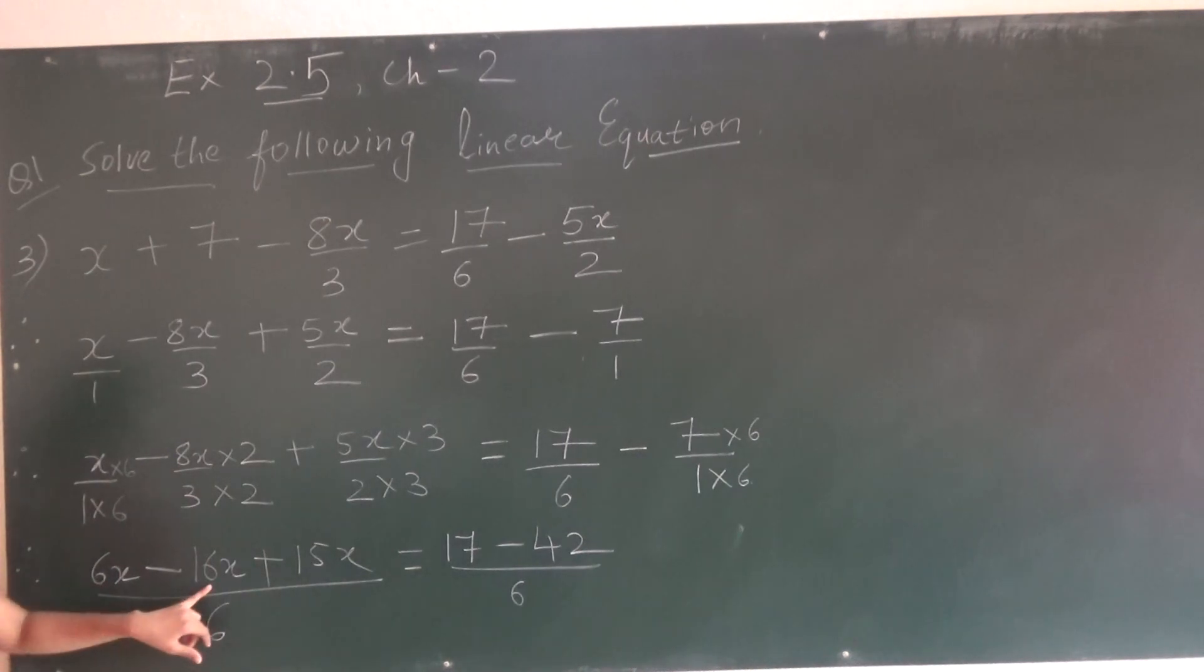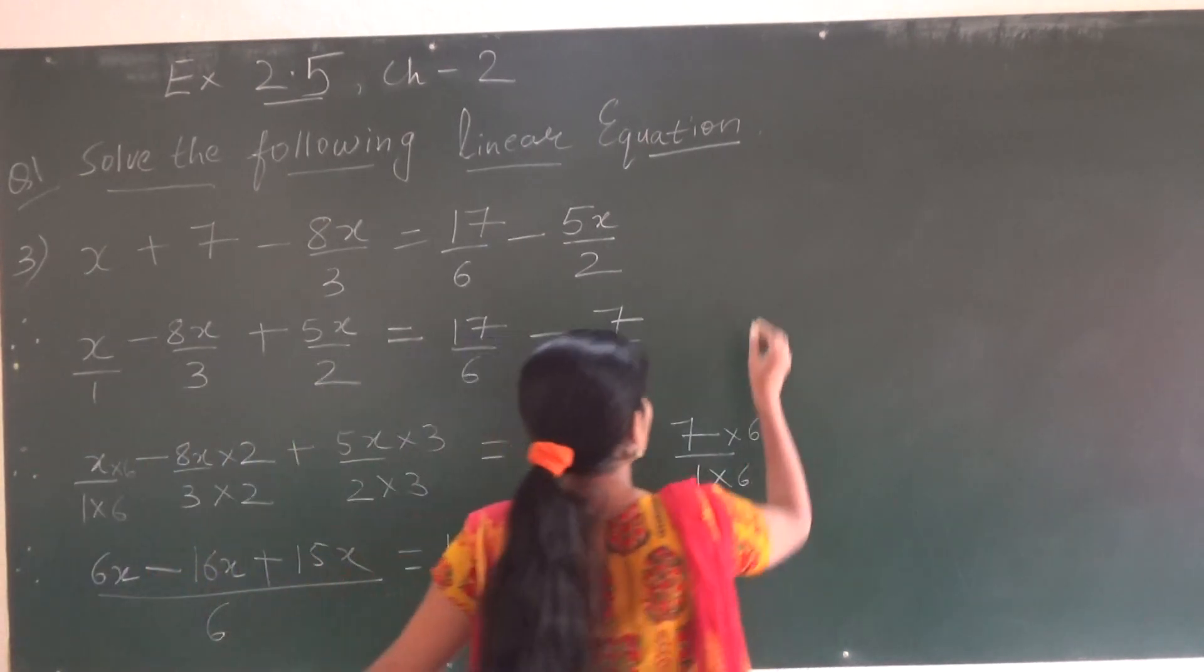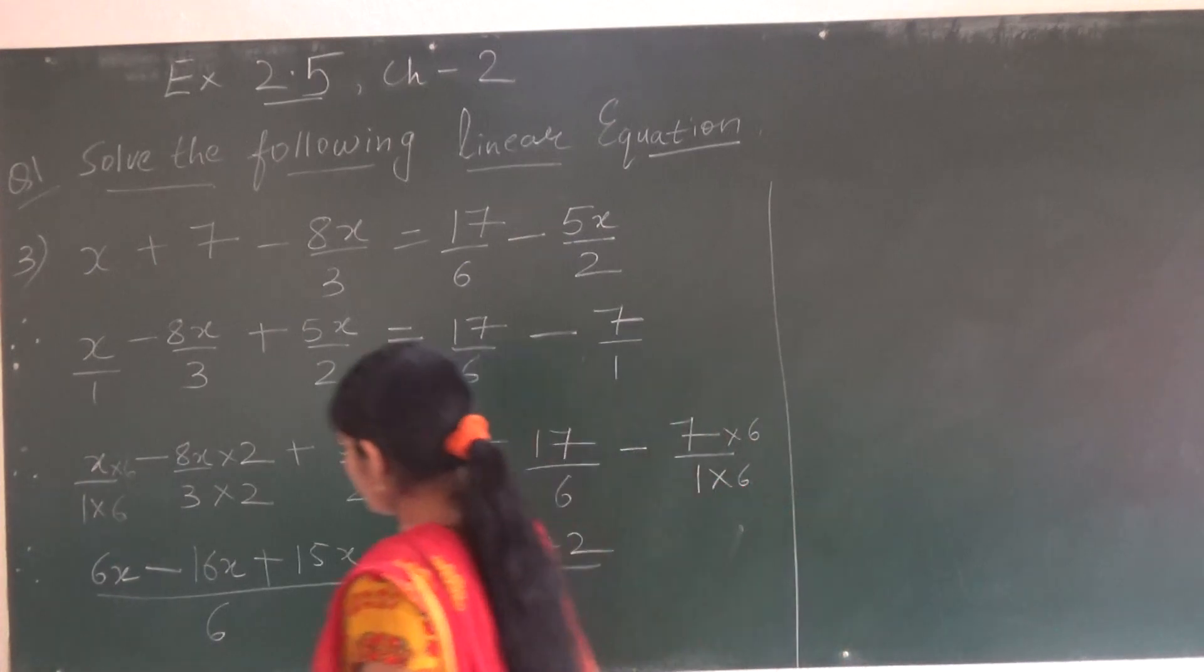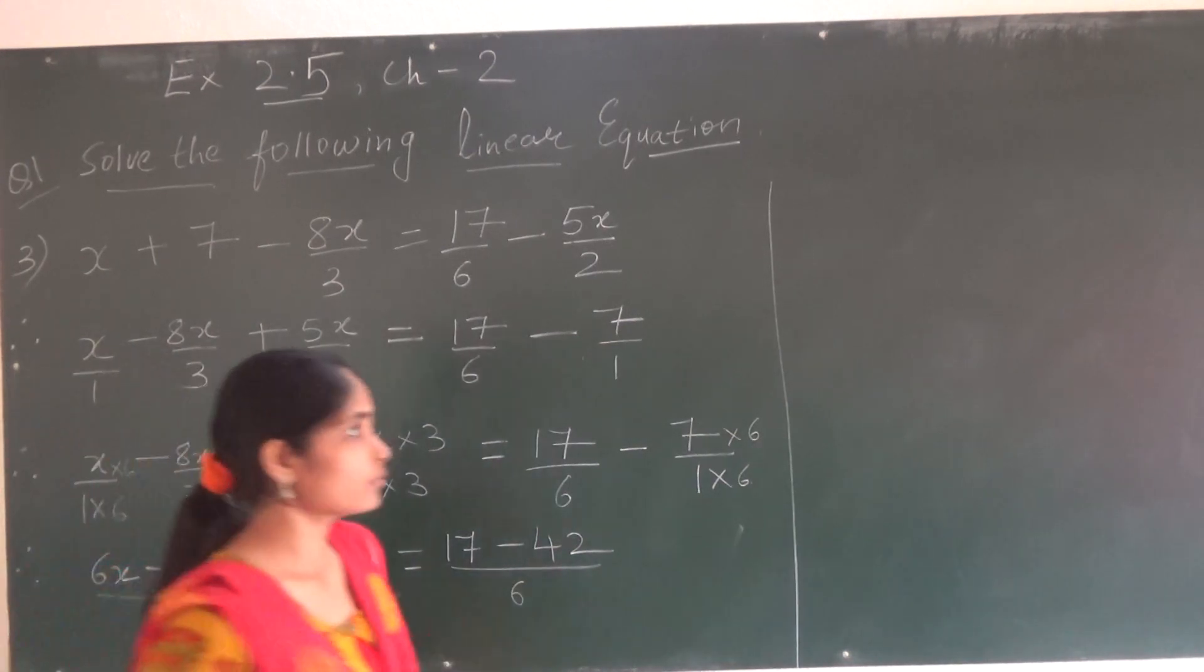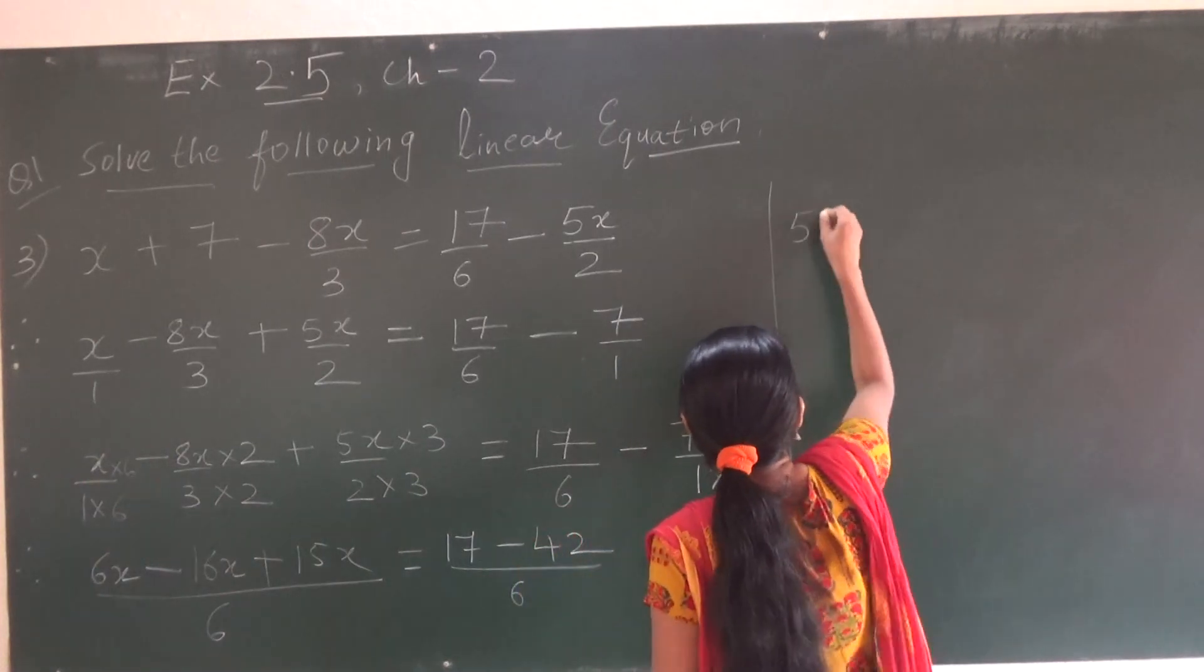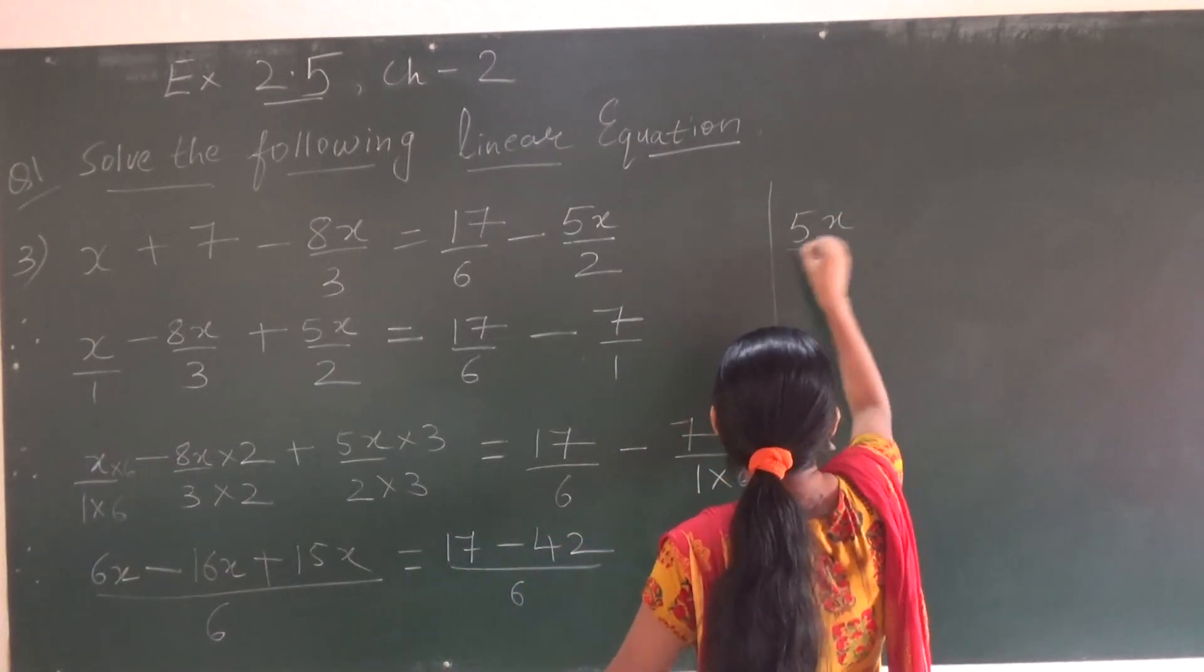Now 6 minus 16 and then plus 15. So what I will get? 6 minus 16 will be minus 10. Minus 10 and plus 15, so will be 5x. So 5x upon 6.